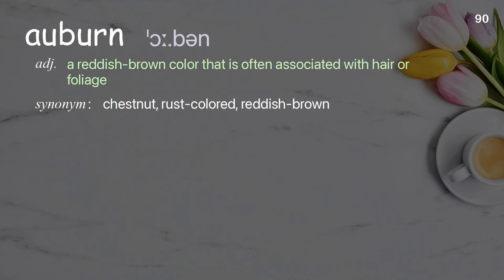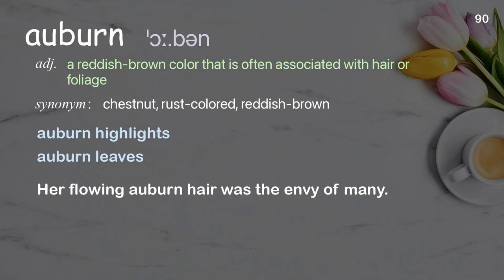Auburn. A reddish-brown color that is often associated with hair or foliage. Examples: auburn highlights, auburn leaves. Her flowing auburn hair was the envy of many.